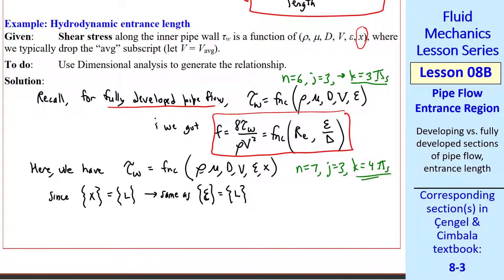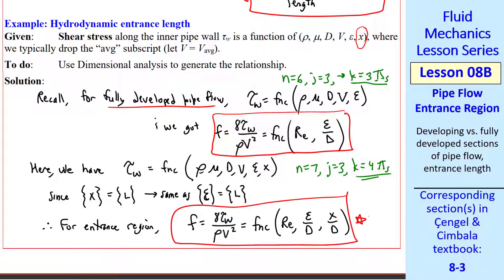So instead of that expression for fully developed pipe flow, for the entrance region, the Darcy friction factor is now a function of Reynolds number, relative roughness, and x over d. You're welcome to try this one on your own from scratch for practice.